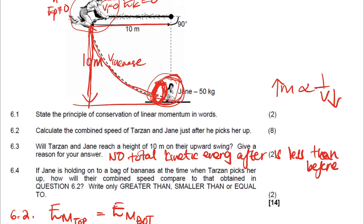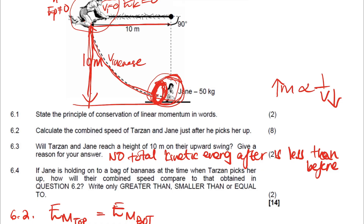Question 6.4 asks: if Jane is holding a bag of bananas when Tarzan picks her up, how will their combined speed compare to the answer in question 6.2? The bag of bananas contributes to an increase in total mass. The more the mass increases, the more the velocity decreases — they are inversely proportional. Therefore, the combined velocity will be smaller than 8.62 meters per second.